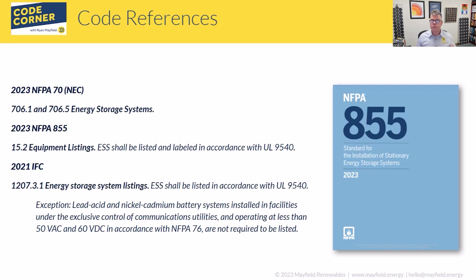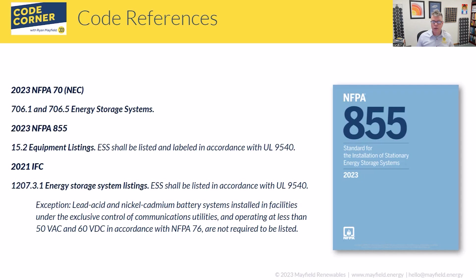For the lithium-ion battery systems we're installing today, in order to meet fire codes and NFPA 855, we're going to have to have listed systems. When you're dealing with manufacturers and systems, you want to look at the system as a whole — what is that listing, what does it entail? Sometimes individual parts and pieces are designed to go together but may not be listed to go together. That's a key differentiation you should be asking your manufacturer.